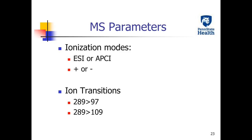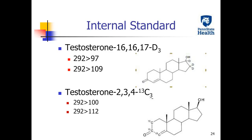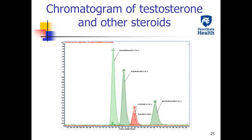The mobile phase could be water with either methanol or acetonitrile, or a mixture of these two. Ionization method could be electrospray ionization or atmospheric pressure chemical ionization, with either positive or negative mode. The mass-to-charge ratio of testosterone is 289, and it has two product ions with mass-to-charge ratios of 97 and 109, respectively.